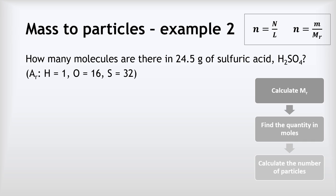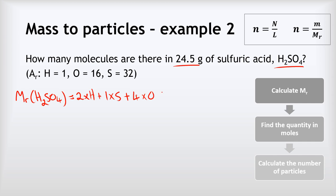Example two: how many molecules are there in 24.5 grams of sulfuric acid, H₂SO₄? We take the same approach. First, calculate the MR of H₂SO₄: that's 2 times hydrogen plus 1 times sulfur plus 4 times oxygen, giving 2 times 1 plus 1 times 32 plus 4 times 16, which gives an MR for sulfuric acid of 98.